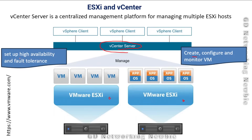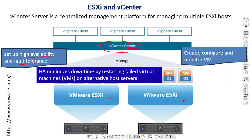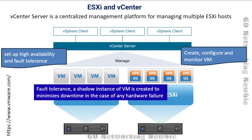The vCenter server can be used to configure high availability and fault tolerance. High availability minimizes downtime by restarting a failed virtual machine on an alternative host server. Fault tolerance works differently - vCenter creates a shadow instance of a virtual machine so that if any hardware failure occurs, the virtual machine can be immediately started from that shadow instance.